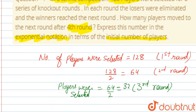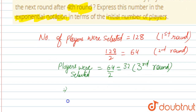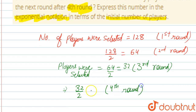In the fourth round, we need to tell how many players were selected for the next round after the fourth round. According to this, we can directly write it as 32 divided by 2 in the fourth round. That means finally 16 players were selected in the fourth round.